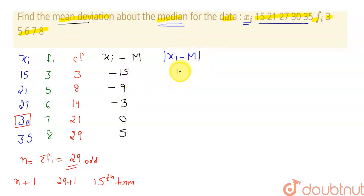So this is 15, 9, 3, 0 and 2. Now to calculate this mean deviation, we have to calculate one more term which is |x_i minus M| into f_i. Product of this term into frequencies.